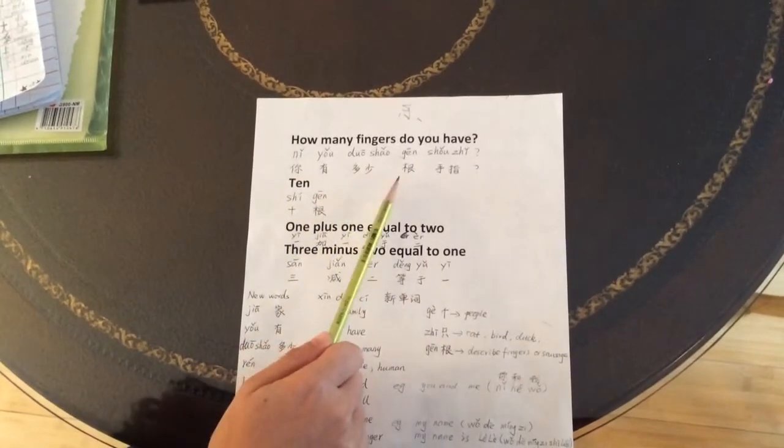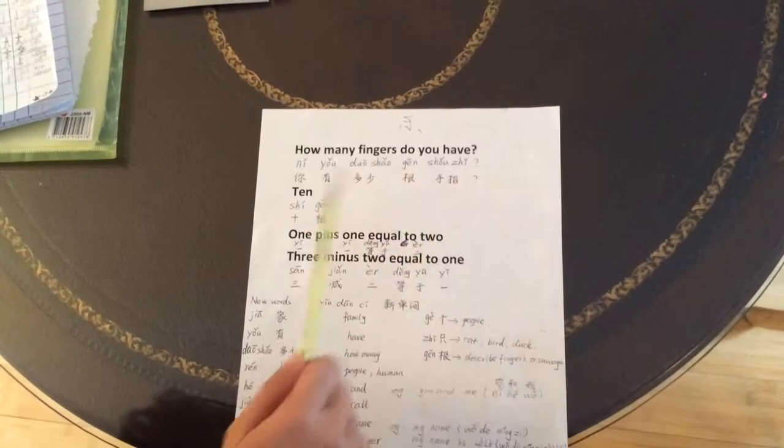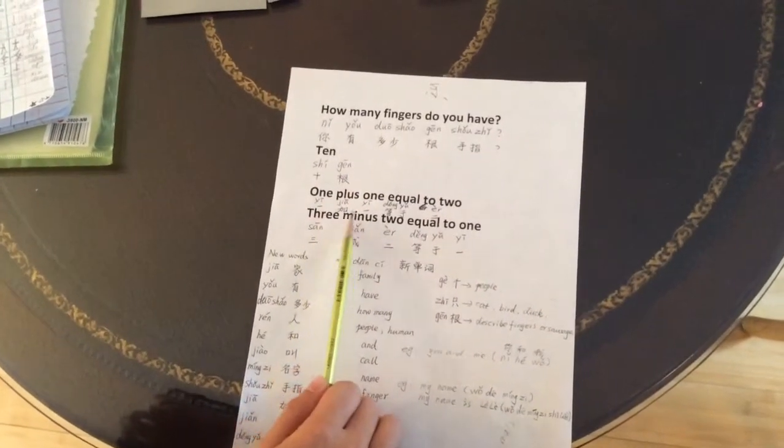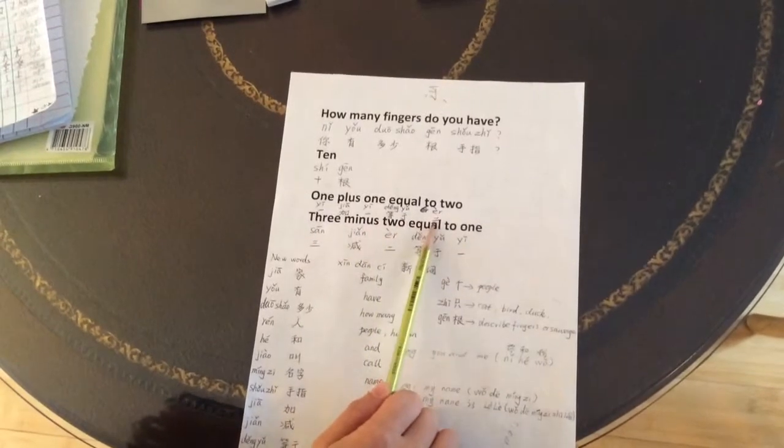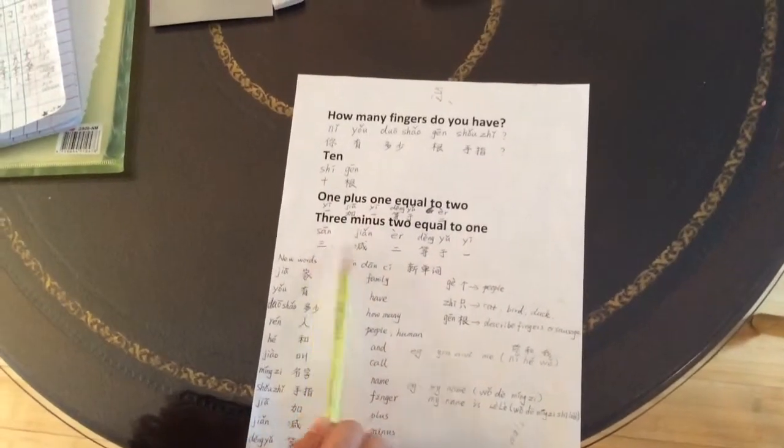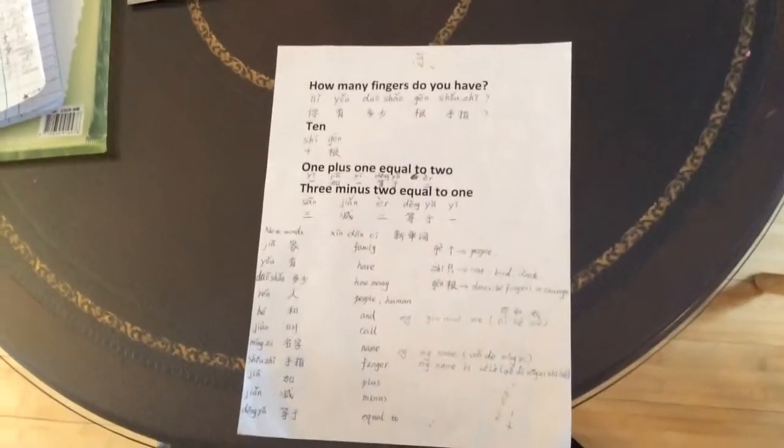你有多少根手指? 根 is used to describe 手指. 十根. And 一加一等于二. You can change the numbers here. 三减二等于一.